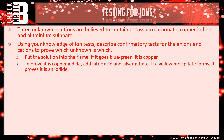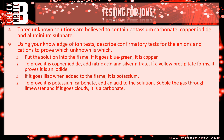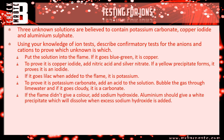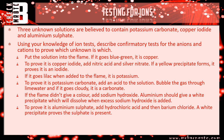Next, for potassium: put it into a flame; if it goes lilac it's potassium. To prove it's potassium carbonate, add an acid to the solution. If a gas is given off, bubble that gas through lime water; if it goes cloudy it's a carbonate and you have potassium carbonate. Finally for aluminium sulphate: you won't get a flame test colour, so add sodium hydroxide — it'll give you a white precipitate which will then dissolve when you add excess sodium hydroxide. Then add hydrochloric acid then barium chloride and you'll get a white precipitate which proves the sulphate is present.